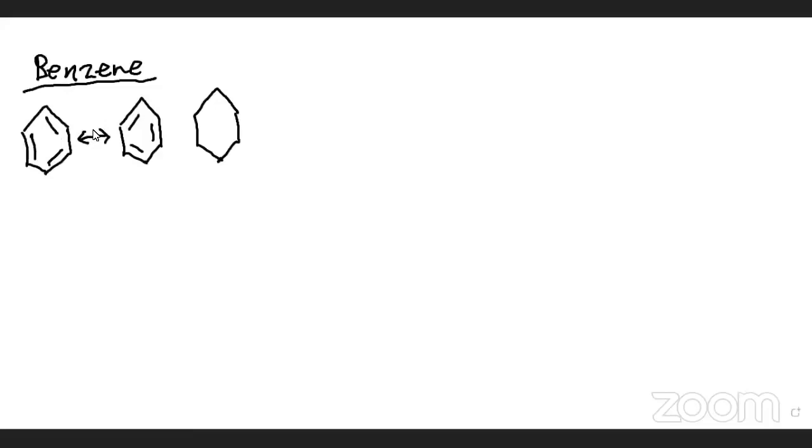These two structures can be used to represent benzene. So if you notice, for this one, the double bond is here, here, and here, but in this one, it's in the other places.